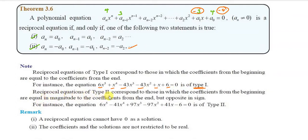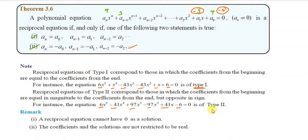Reciprocal equations of Type 2 correspond to those in which the coefficients from the beginning are equal in magnitude to the coefficients from the end but opposite in sign. For example: here is plus 6 and here is minus 6, here is minus 41 and here is plus 41, here is plus 97 and here is minus 97.